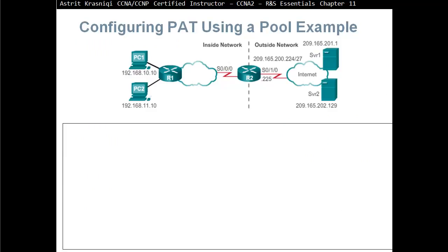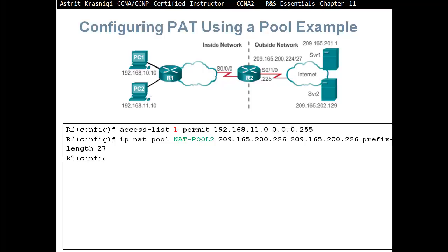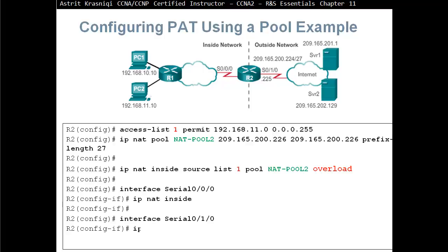To configure PAT using a pool — you can configure it on the interface or with a pool, like dynamic NAT — it is essentially the same as dynamic NAT with one additional word. We create an access control list to permit which addresses from which networks should be translated. We create the pool defining the public IPv4 addresses available. Then we bind the access list to the pool: IP NAT inside source list 1 pool NATPOOL2 — but this time we add overload, which enables port number translation as well.